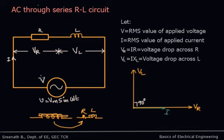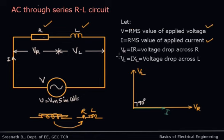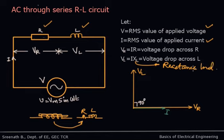Voltage Vr develops across R and Vl develops across L — those are the RMS values of voltages across R and L. A current I flows through it, which is the RMS value of the applied current. The RMS value of the applied voltage is V, and Vr = I×R and Vl = I×XL respectively, where XL is the inductive reactance of the inductor.